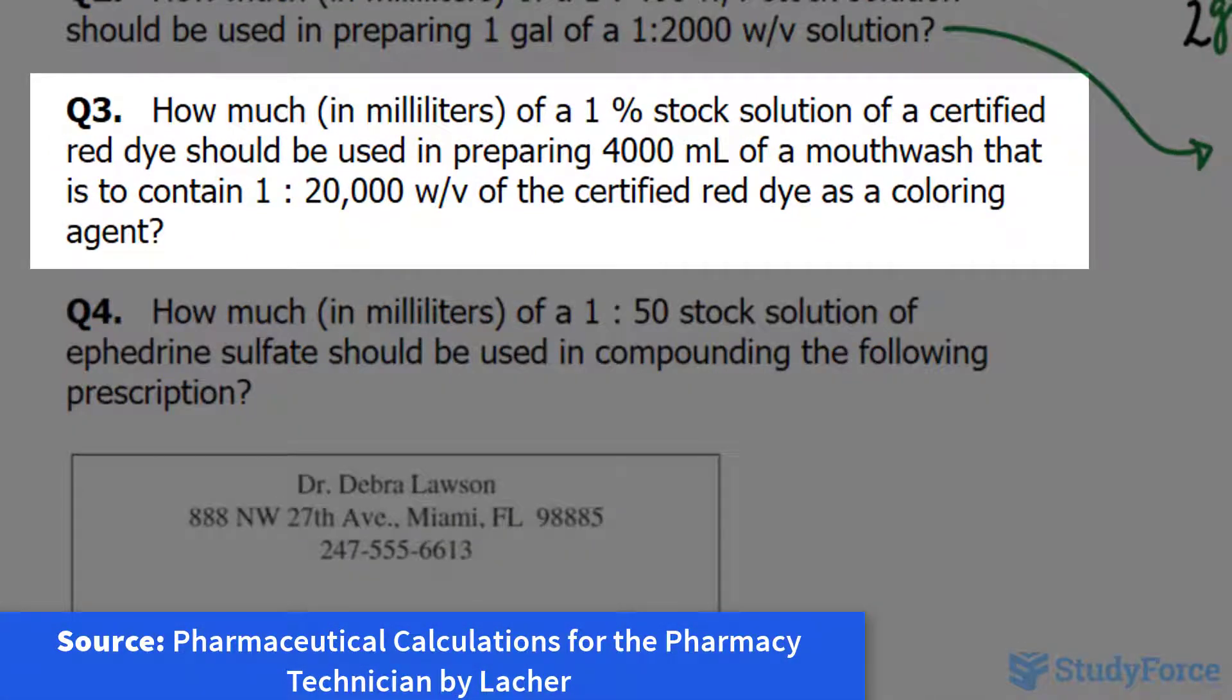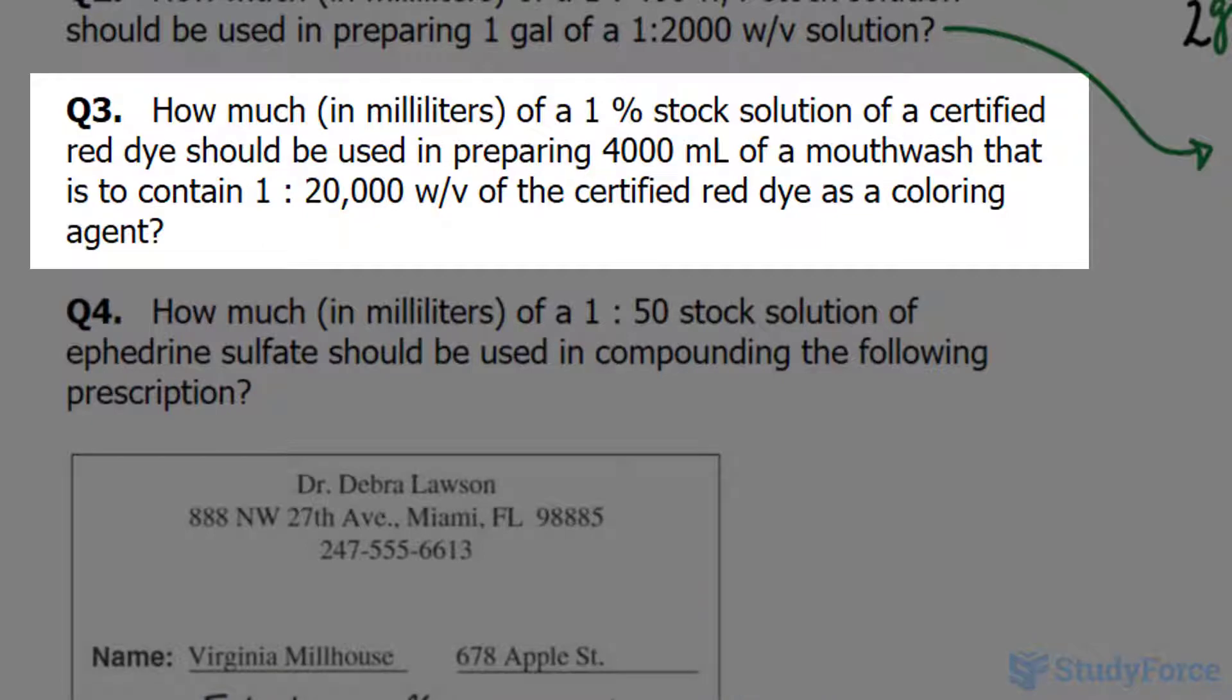Question three reads: How much in milliliters of a 1% stock solution of a certified red dye should be used in preparing 4,000 milliliters of a mouthwash that is to contain 1 in 20,000 weight per volume of the certified red dye as a coloring agent?